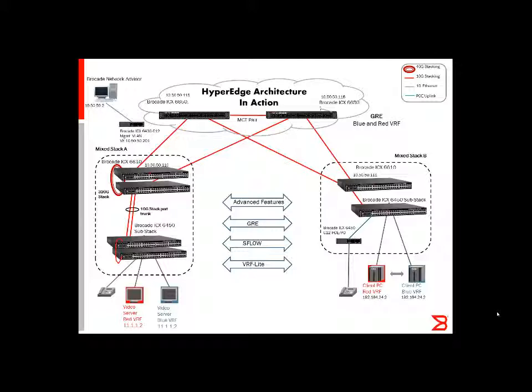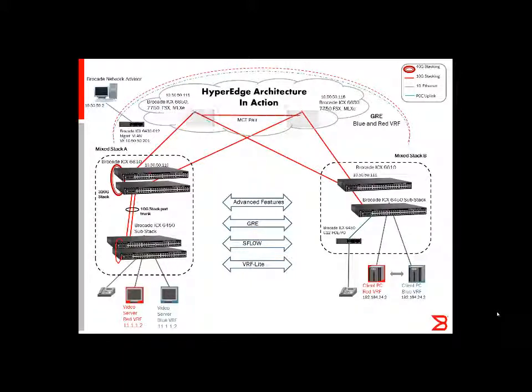I am running VRF Lite on each stack, and I have two video servers — one streaming a U.S. Navy video and the other one streaming a U.S. Air Force video. I also have a video client in Stack B. My core is only running Layer 2, so I created a GRE tunnel across the core to route VRF Lite between the two mixed stacks.